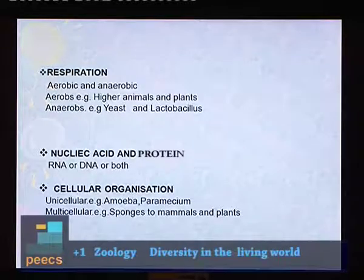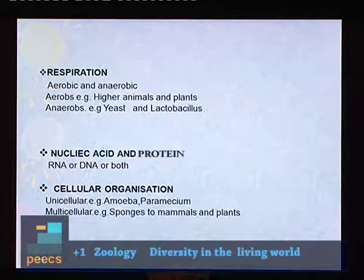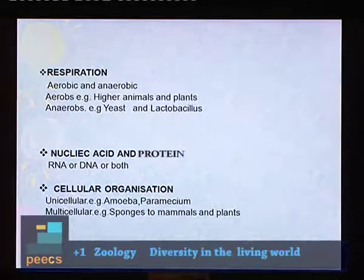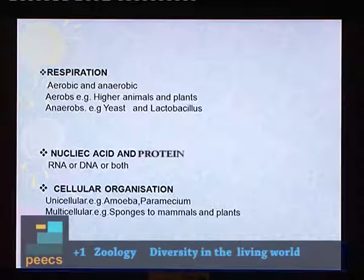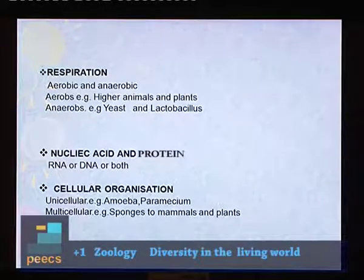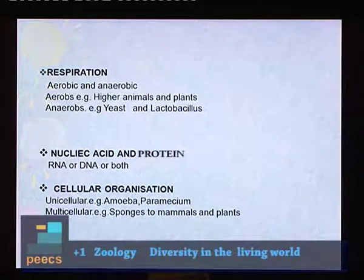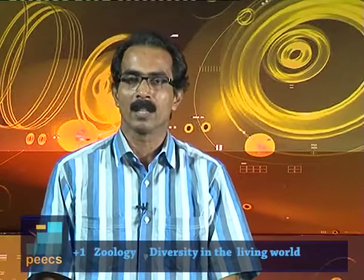Another important feature of living things is the presence of nucleic acid and protein. RNA and DNA are the main nucleic acids, and RNA or DNA or both are found in every living thing. Protein is also found in every organism. Cellular organization is a feature of living things — the body may contain a single cell or many cells. Cells join to form tissues, tissues join to form organs, and organs join to form organ systems in higher animals.